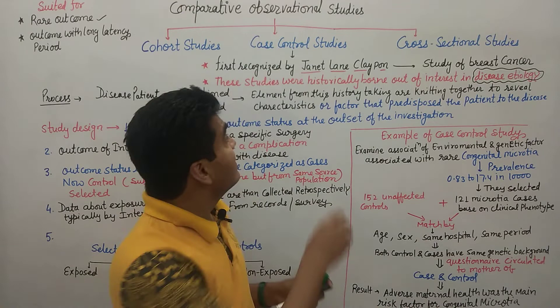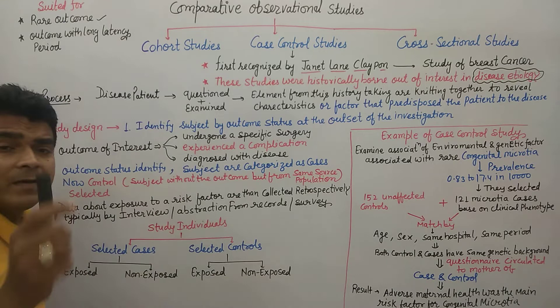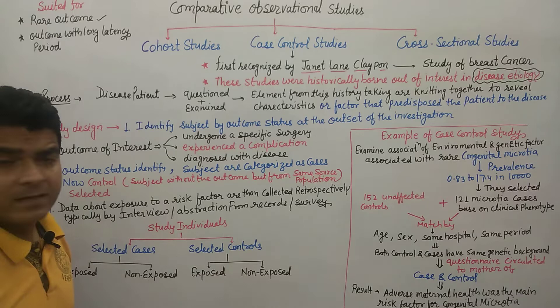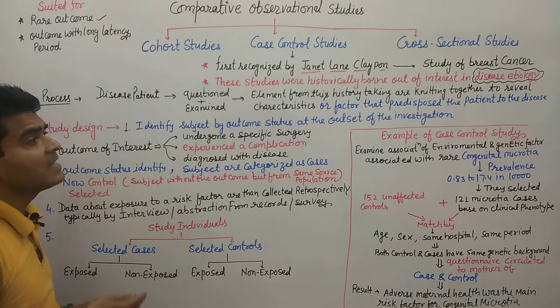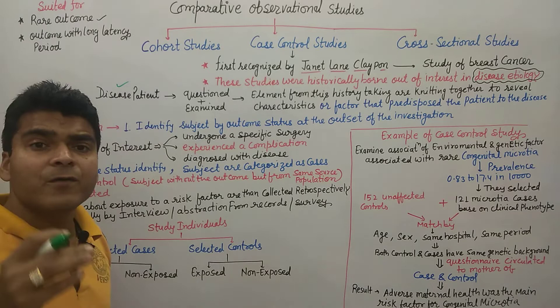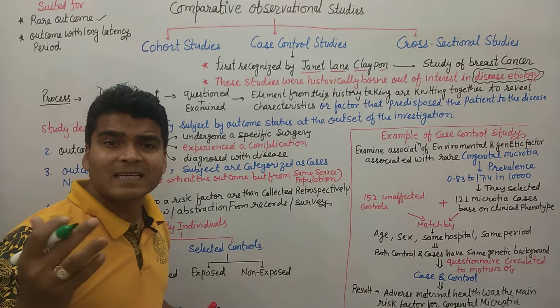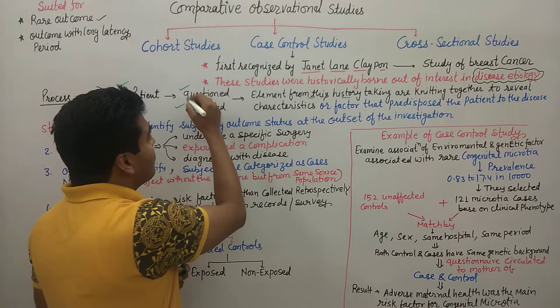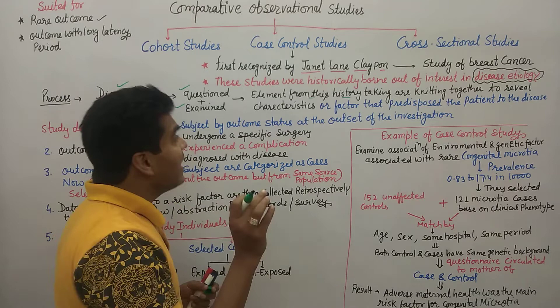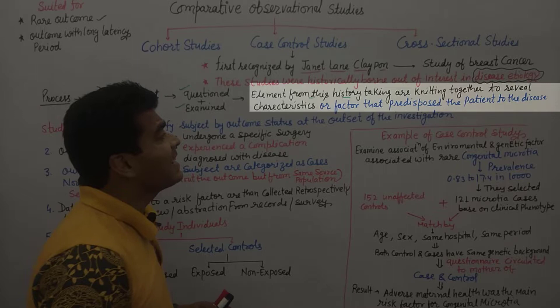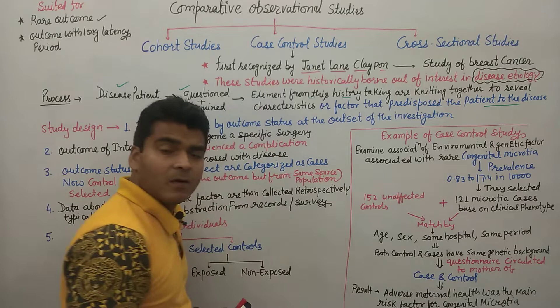In the case control study process, we first select disease patients — those who already have the disease. We then question and examine them, and from that questioning and examination we find certain elements. These elements are knitted together to reveal characteristics or factors that predispose the patient to the disease.